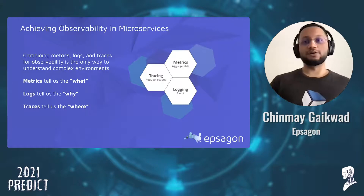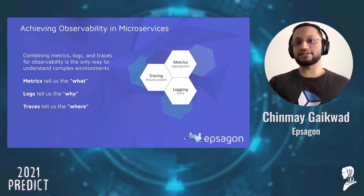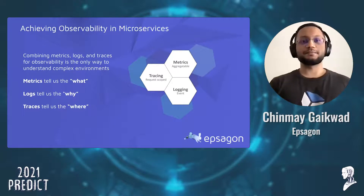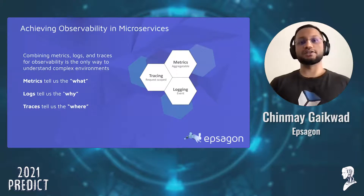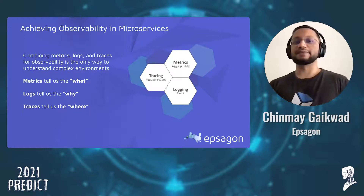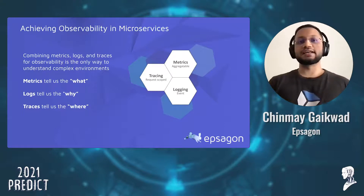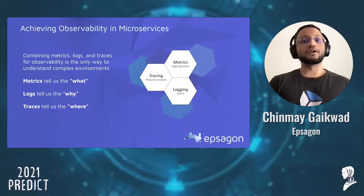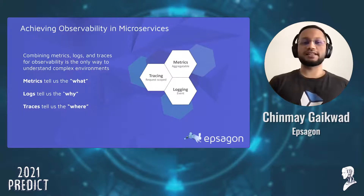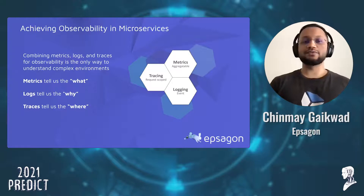The three pillars of observability are very well known: metrics, logs, and traces. We will discuss tracing later. Metrics are a great way for operations to figure out if something has gone wrong — examples include CPU usage or memory usage, as well as business-level metrics like bounce rate, revenue, or click-through rate. Logs, on the other hand, can tell us why something has gone wrong. But when you're running hundreds or thousands of microservices, these alone are not enough.